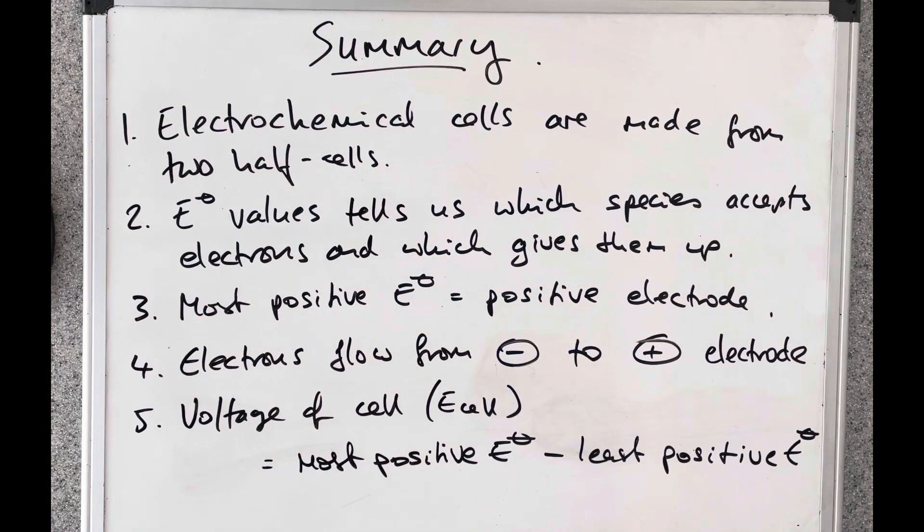So just to finish off I thought I'd do a summary of what we've covered in the video. So the first thing we say is electrochemical cells are made from two half cells. The standard electrode potential values, the E naught values, tells us which species will accept electrons and which will give up the electrons. So remember the most positive standard electrode potential is the species on the left which will accept the electrons. And for the least positive one the species on the right will give up its electrons.